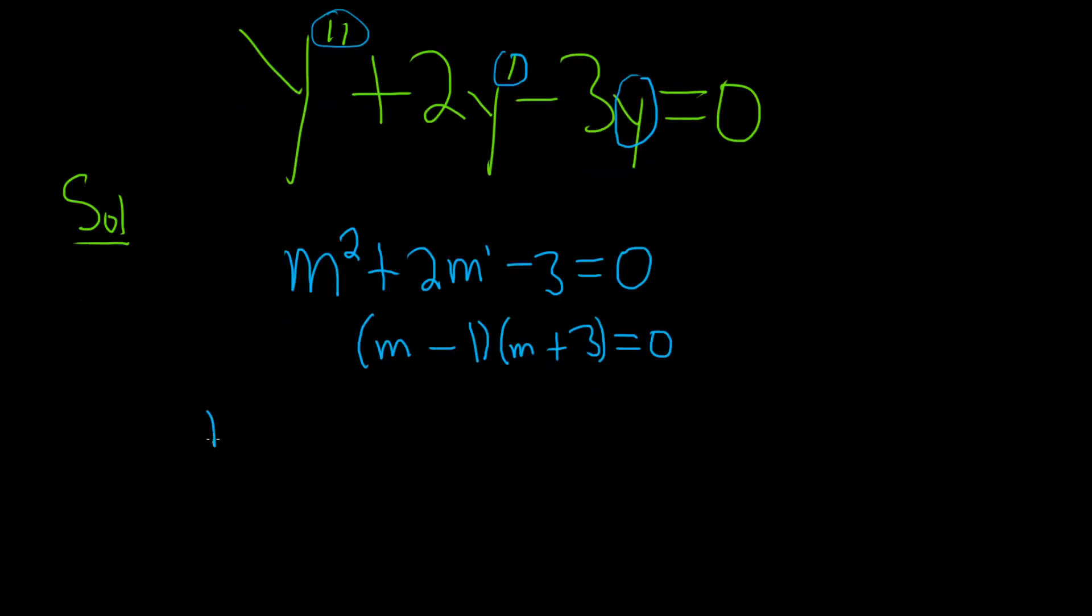So we set each factor now equal to zero. m minus one equals zero. Then here we have m plus three equals zero. So here we get m equals one, and then here we get m equals negative three.